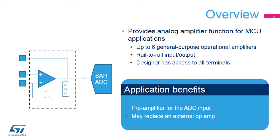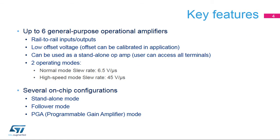They can also act as a pre-amplifier for the ADC input. The operational amplifier inside STM32G4 products offers general-purpose rail-to-rail inputs and outputs. The input-offset voltage can be calibrated in the application to achieve minimal offset. All the terminals are accessible by the user so that any operational amplifier function can be configured with external passive components.